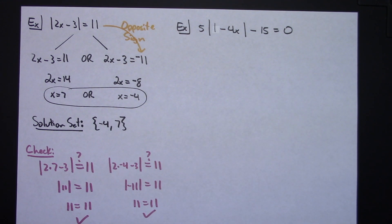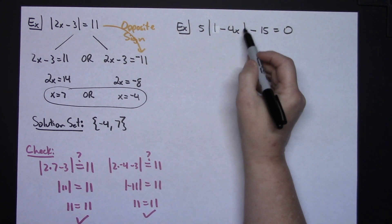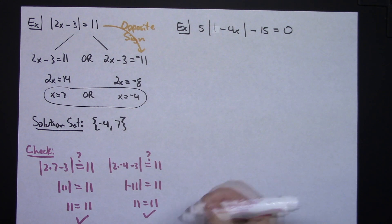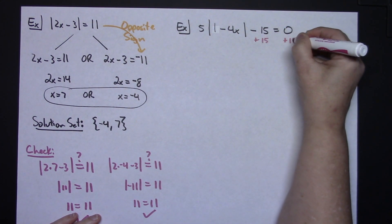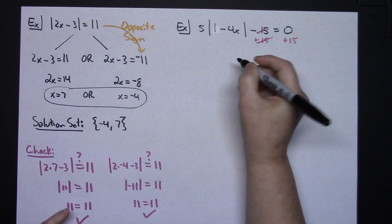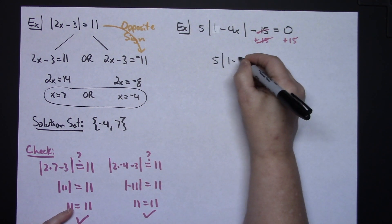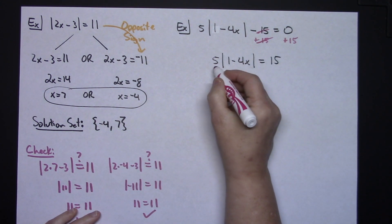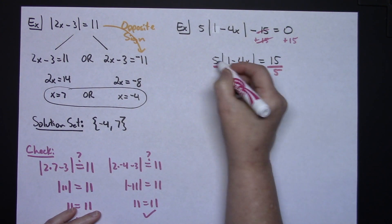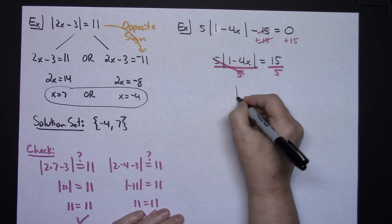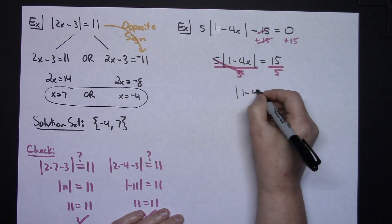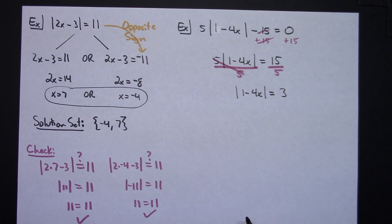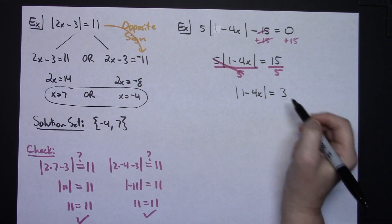Now for the second example, the absolute value bars are not isolated, so I need to deal with the 15 and the 5 first. I add 15 to both sides to get 5 times the absolute value of 1 minus 4x equals 15. Then I divide both sides by 5, leaving the absolute value of 1 minus 4x equals 3. Now the absolute value bars are isolated and equal to a positive number.